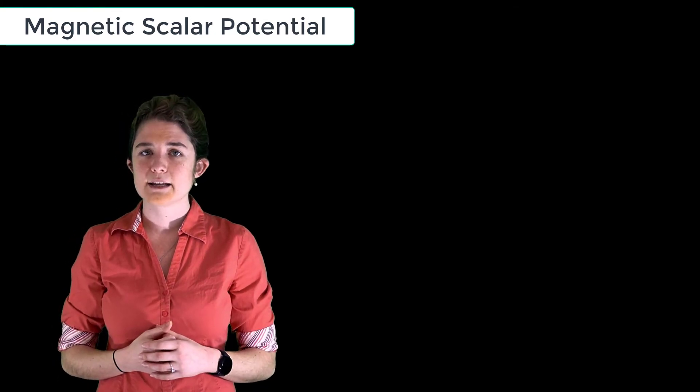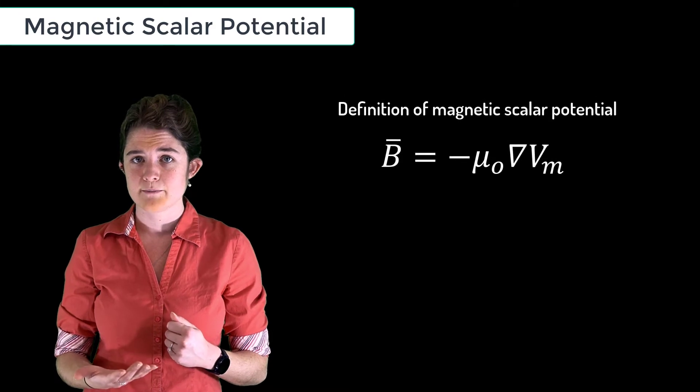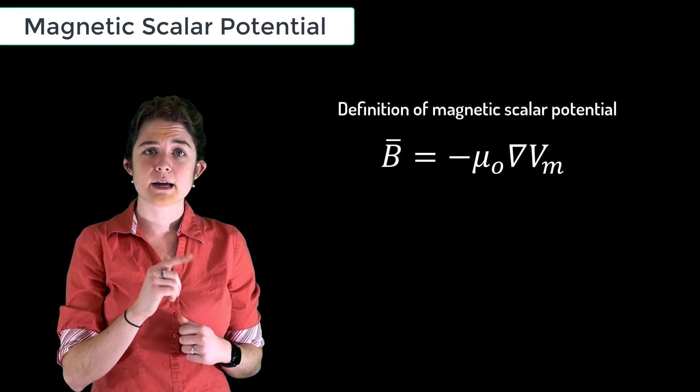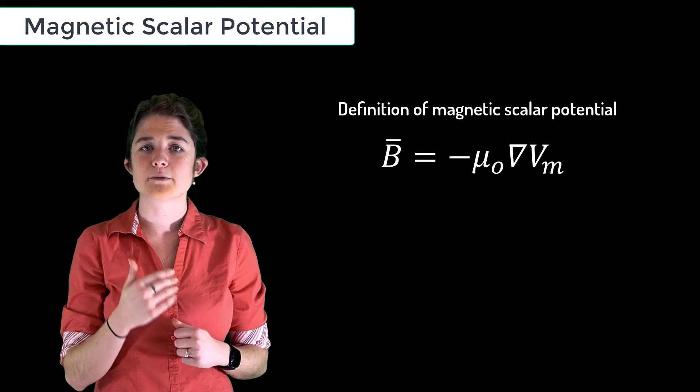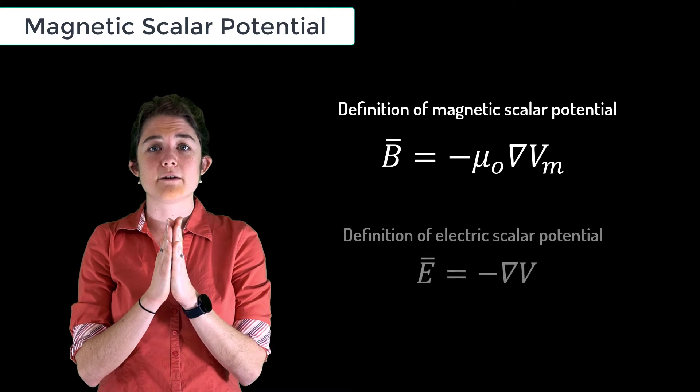define a magnetic scalar potential in much the same way that we define the electric scalar potential. Here, the negative gradient of V_m times the permeability equals the magnetic flux density. This mirrors the definition of electric potential where the electric field was equal to the negative gradient of voltage.